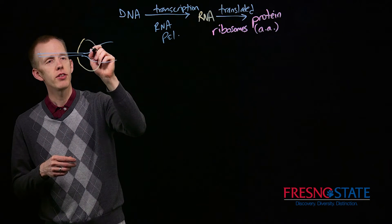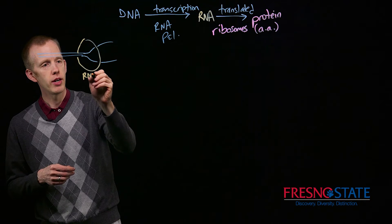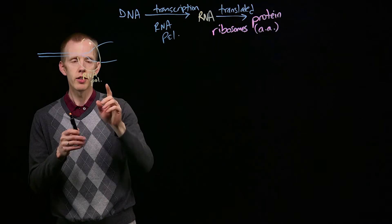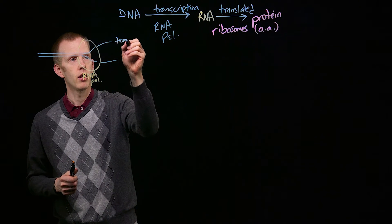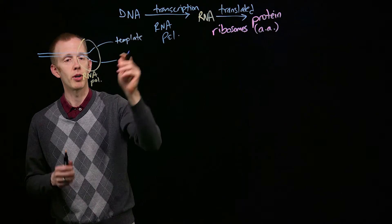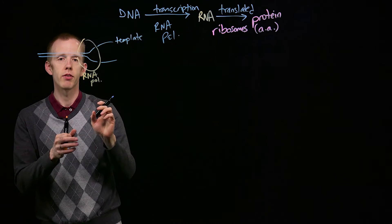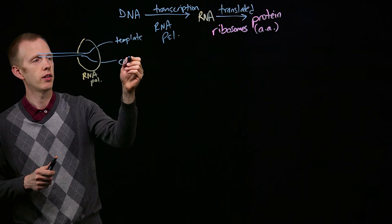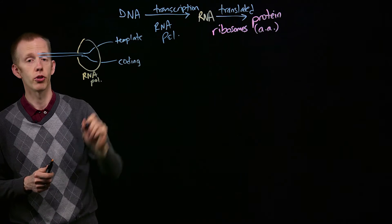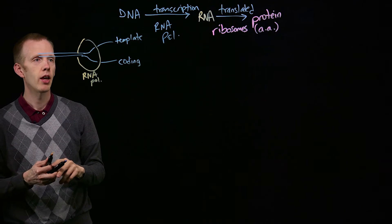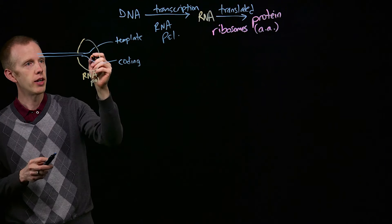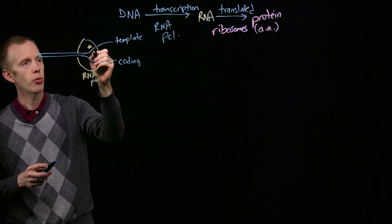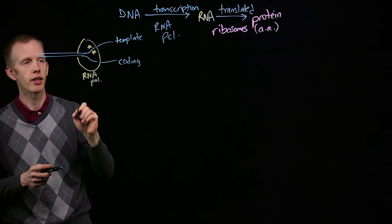As RNA polymerase moves along the template strand of the DNA, RNA polymerase itself separates the two strands of the DNA molecule so you have one strand called the template strand, the second strand we refer to as the coding strand. RNA polymerase reads the nucleotide here and incorporates the complementary nucleotide there.